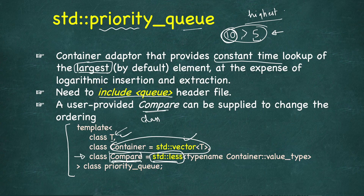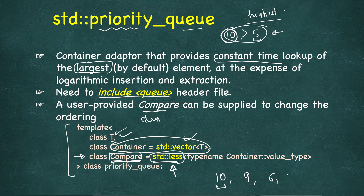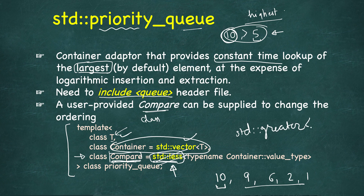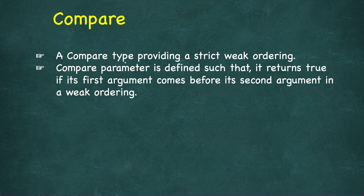We can define our own comparator. If we don't, the default will be std::less, which arranges in descending order of priority — so 10 will be given higher priority than 9, 6, 2, 1, and so on. If we change it to std::greater, the priority order will be reversed.